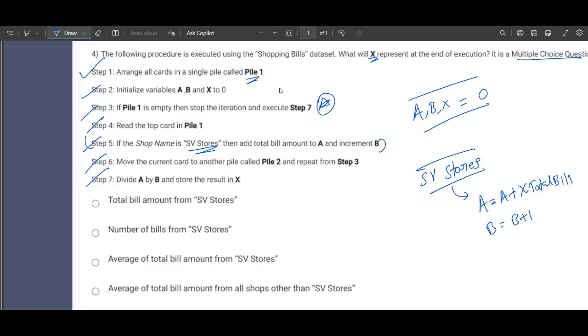So what should happen from this criteria which is presented in line number five? What understanding can we develop or what inference can we get from that? The variable called A stores the total bill amount from SV Stores, and B stores the number of bills of SV Stores.